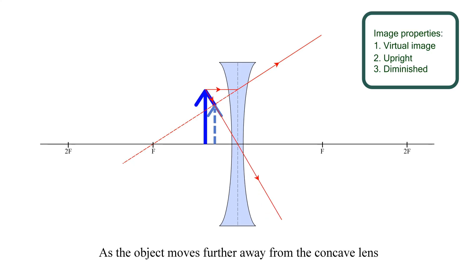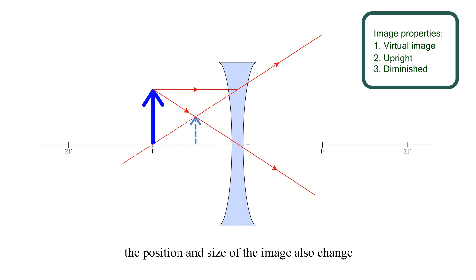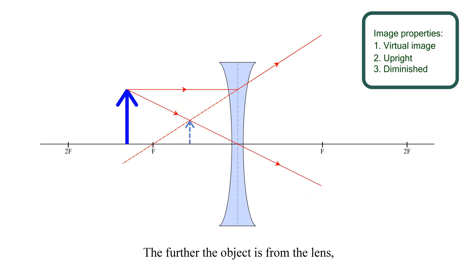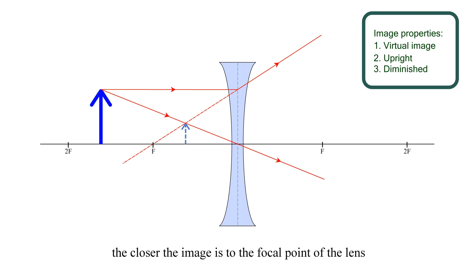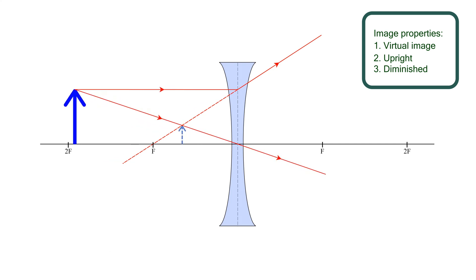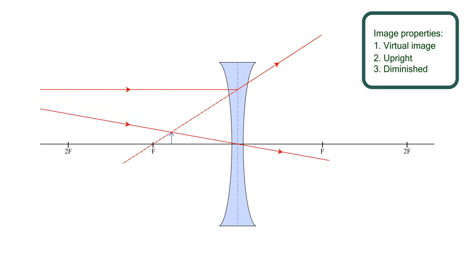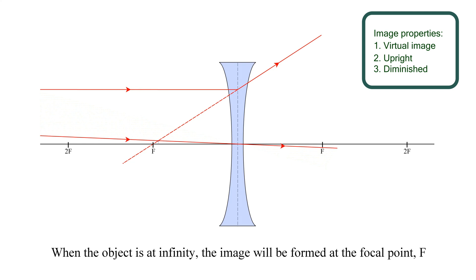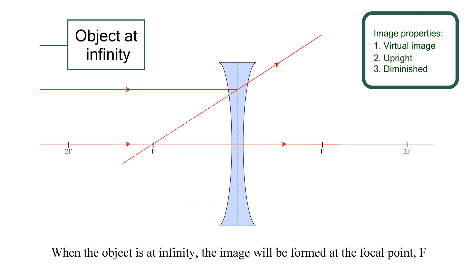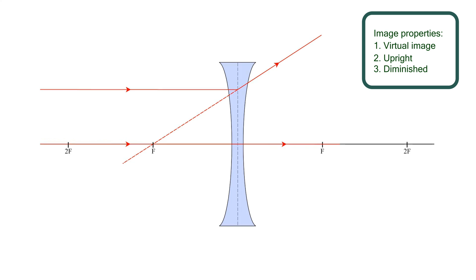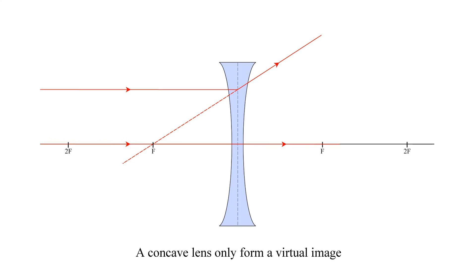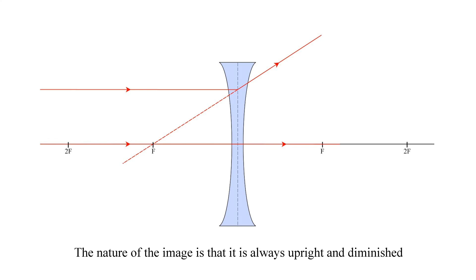As the object moves further away from the concave lens, the position and size of its image also change. The farther the object is from the lens, the closer the image is to the focal point of the lens. When the object is at infinity, an image will be formed at the focal point, F. A concave lens only forms a virtual image. The nature of the image is that it is always upright and diminished.